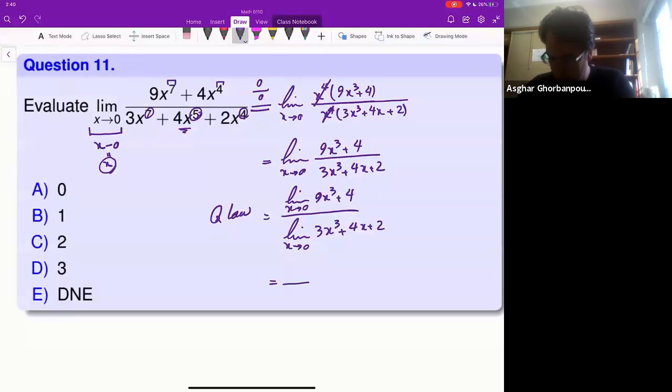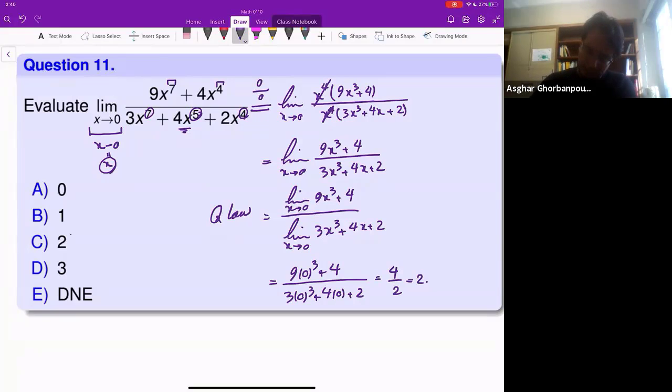And that will tell me this is 9 times 0 cubed plus 4. The denominator is 3 times 0 to the power 3 plus 4 times 0 plus 2. And as you see, this is 4 over 2 which will give me just 2. And that is the final answer.